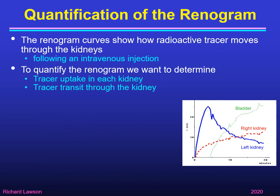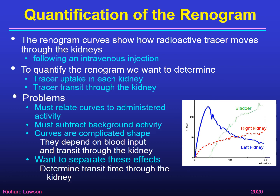These renogram curves show how the radioactive tracer moves through the kidneys following an intravenous injection. To quantify the renogram we want to determine two things: first, tracer uptake into each kidney, and secondly, tracer transit through the kidney. The problems we have to deal with include relating the curves to the administered activity and subtracting background activity. The curves are also a complicated shape because they depend on blood input as well as transit through the kidney, and we want to separate these two effects in order to determine the transit time through the kidney.